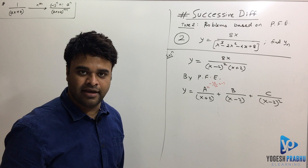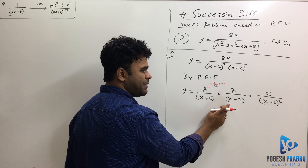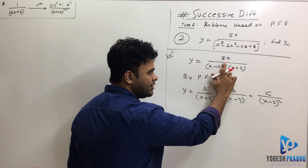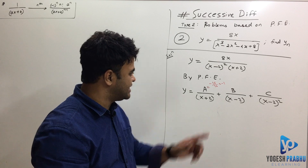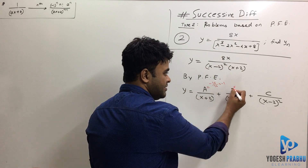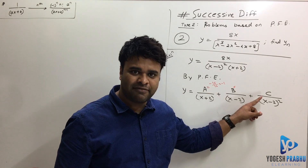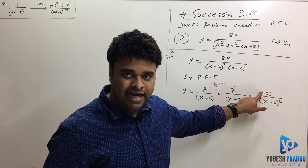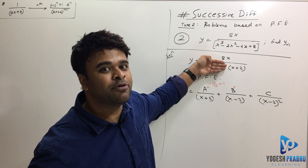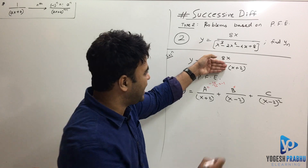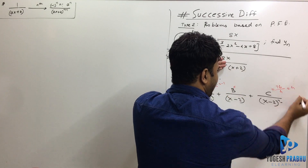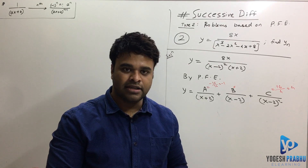To find B, you'd need to hide (x minus 2), but there are two (x minus 2) factors — (x minus 2) and (x minus 2) squared. Hiding only one still leaves (x minus 2) in the denominator, which becomes zero when x equals 2, making the term infinity. So this method won't work for B. However, to find C, hide (x minus 2) squared and put x equal to 2: 8 times 2 is 16, and (2 plus 2) is 4, so C equals 4.